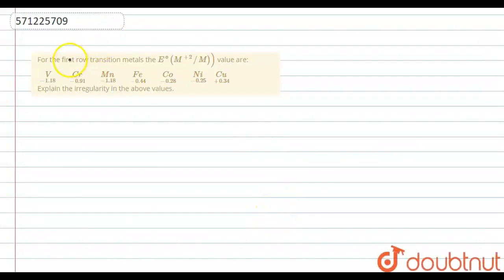In this question we have been asked for the first row transition metals, the E0, that is M+2 to M values are: for vanadium it's -1.18, for chromium it's -0.91, for manganese it is -1.18, for ferrous it is -0.44, for cobalt it is -0.28, for nickel it's -0.25 and for copper it is +0.34. Explain the irregularity in the above values.